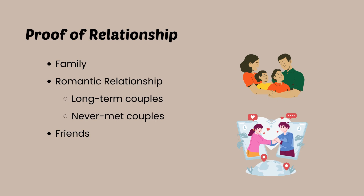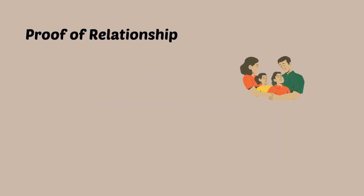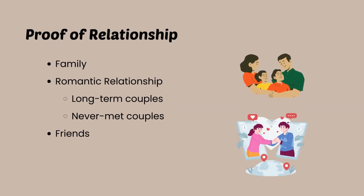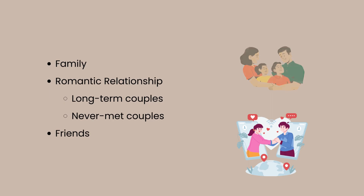The proof of relationship would be any document that will determine or document the relationship between you and your sponsor, or you and the person you are visiting, in any of the visa-required countries that you are an applicant to. With this video, I am going to divide it into three parts: for family, for those with romantic or intimate relationships, and for friends.